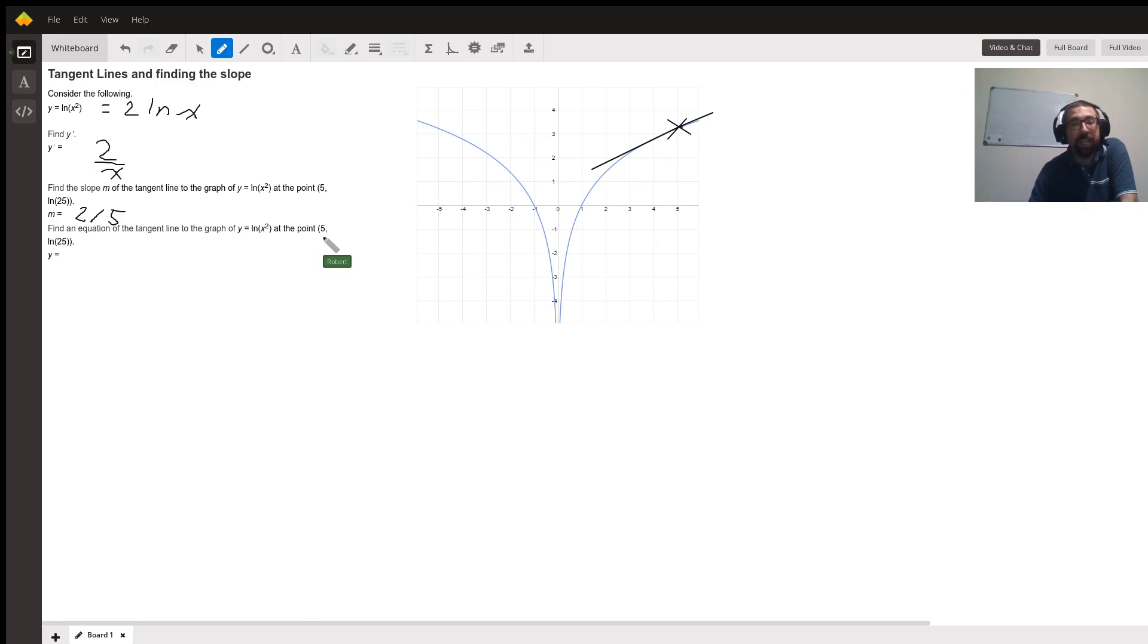So if they didn't tell you that it's 5 ln 25, you'd say, well, I know the x is 5, so I'd plug it into the original function, ln of x squared, plug in 5, I'd get ln 25. So you need to think back to your rules for finding the equation of a line in y equals mx plus b form. And there are a couple ways to do that.